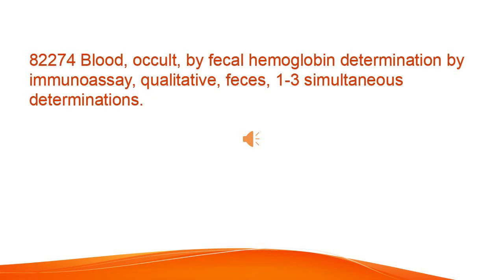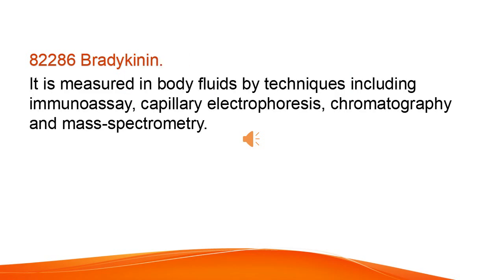Blood Occult by fecal hemoglobin determination by immunoassay — qualitative, feces, 1–3 simultaneous determinations. Bradykinin is measured in body fluids by techniques including immunoassay, capillary electrophoresis, chromatography, and mass spectrometry.